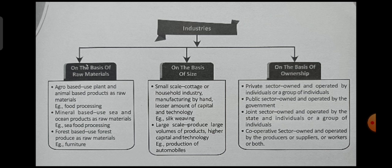An example of small-scale industry is silk weaving. Next is large-scale industry, which produces large volumes of products, uses higher capital and large technology. Examples of large-scale industry are production of automobiles and cars.